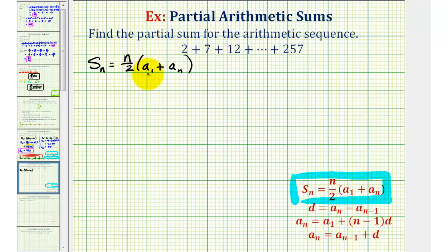So to find this partial sum, we need to know n, the number of terms in this series, we need to know a sub one, the first term in the series, and we also need to know a sub n, the last term in this series.